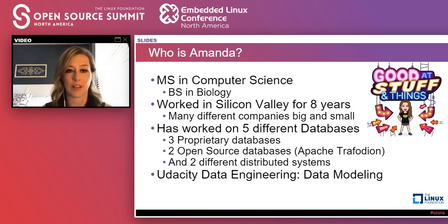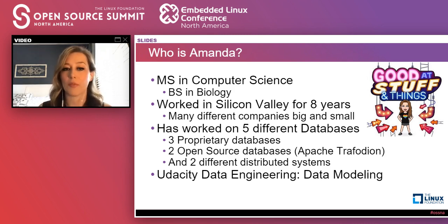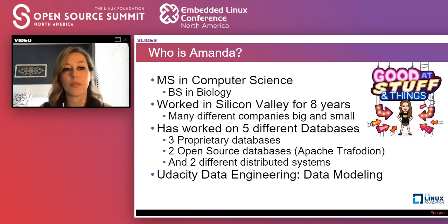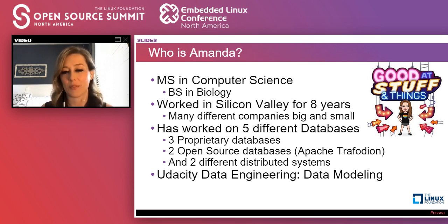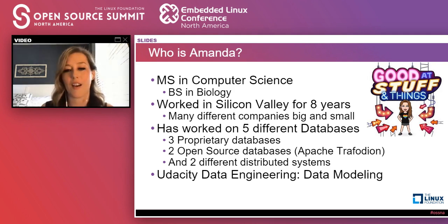Let me introduce myself. I have a Master's in Computer Science from Santa Clara University, and before that a BS in Biology from the University of Washington. I worked in Silicon Valley for over eight years at many different companies, from big companies like HP and Teradata to very small startups with only 30 people. In that journey I've worked on five different databases — three proprietary and two open source, including Apache Trafodion and Apache Cassandra — and two distributed systems: Apache Spark and Kubernetes. I also taught the data modeling portion of the Udacity Data Engineering course.